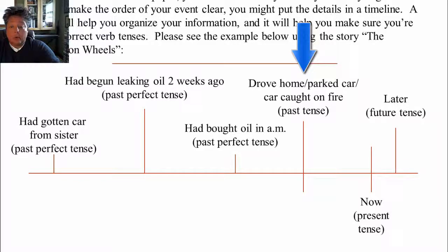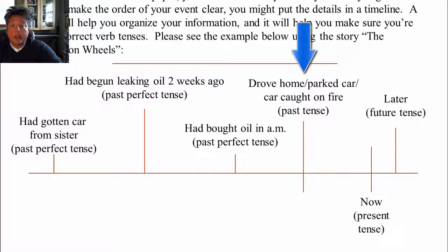If you look right before 'now,' you're using the simple past tense. For example, in the story, I talked about how I drove home, how I parked the car, how the car caught on fire. Those are all in the simple past tense.